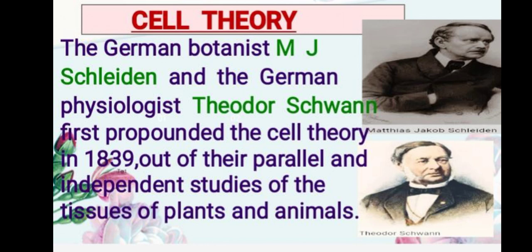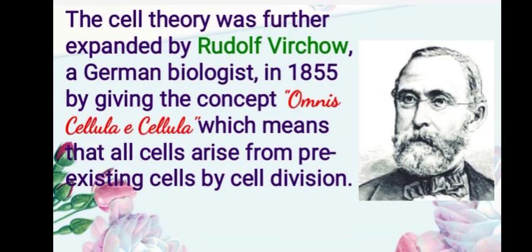The German botanist M.J. Schleiden and the German physiologist Theodor Schwann first propounded the cell theory in 1839, out of their parallel but independent studies of tissues of plants and animals. Later, the cell theory was further expanded by Rudolf Virchow, a German biologist, in 1855, by giving the concept 'Omnis cellula e cellula,' which means all cells arise from pre-existing cells only by cell division.